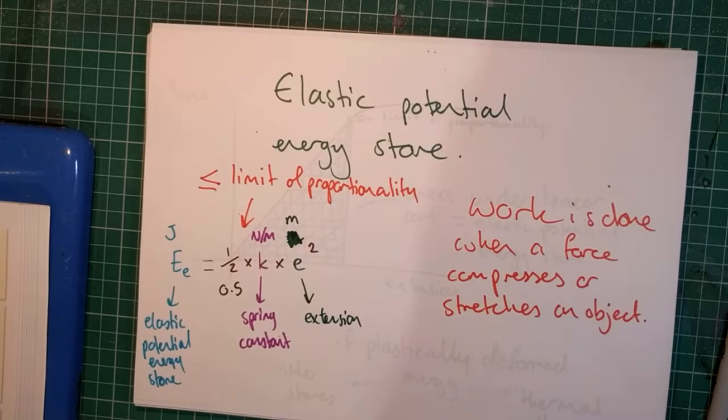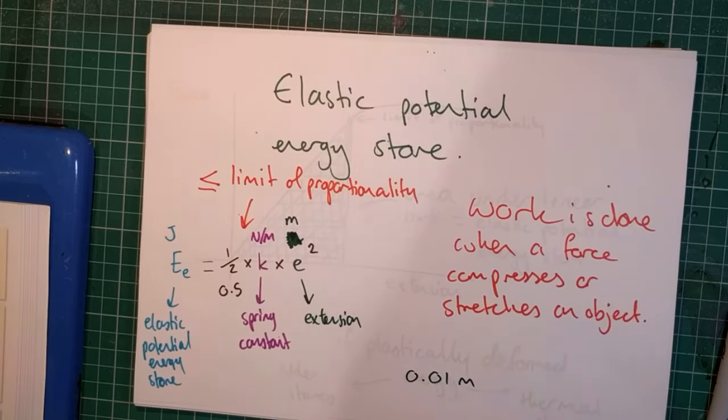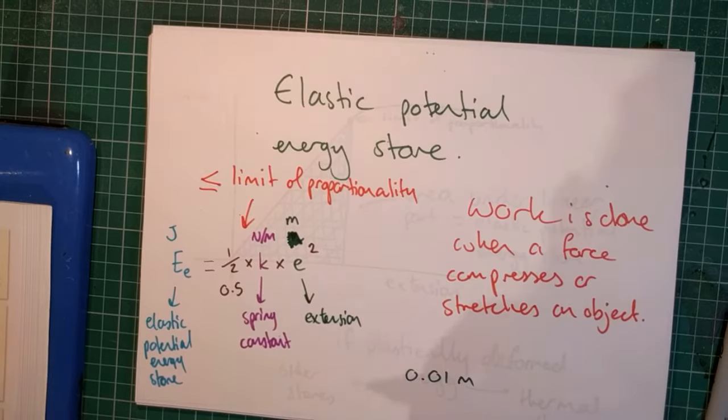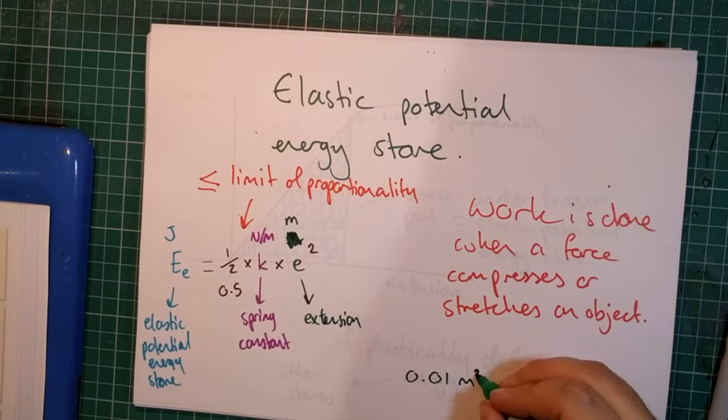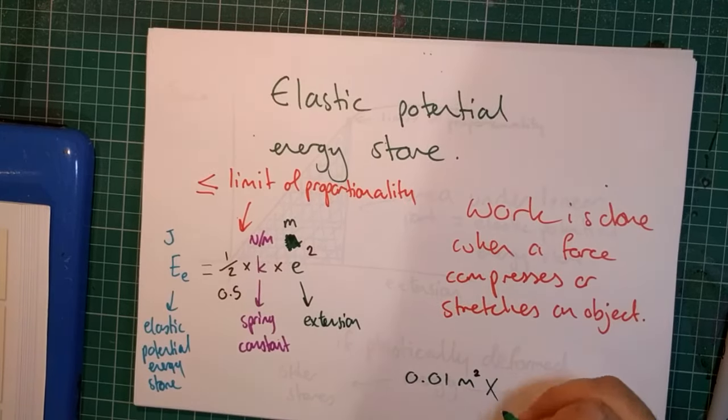If you had an extension of, let's say, 0.01 meters, a one centimeter extension, then you have to remember to square that number. That does not mean that you just put a square in the unit. That's incorrect.